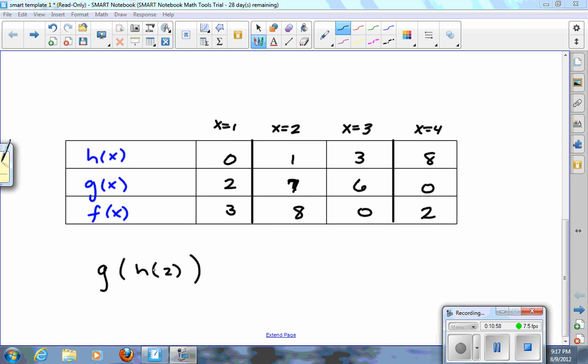So here's another example of a composition where maybe I might ask you to find g(h(2)). So first, you try to find h(2). In other words, find your h function. Here's where 2 is. So h(2) is 1.